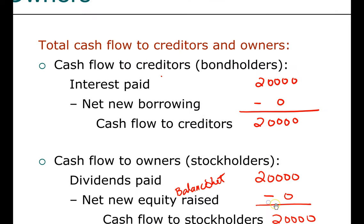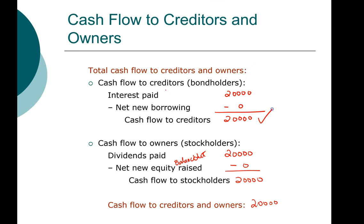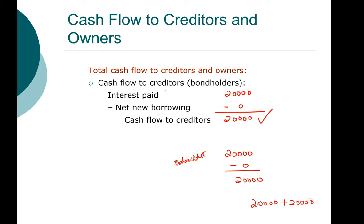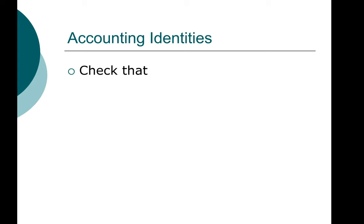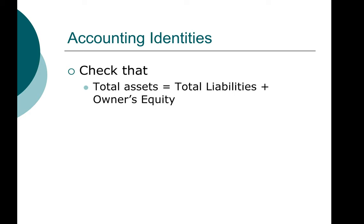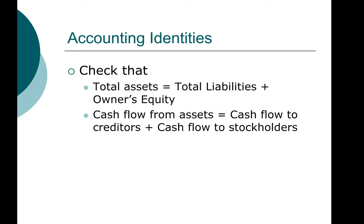Total cash flow to both parties: $20,000 paid to creditors plus $20,000 paid as dividends equals $40,000 — exactly equal to cash flow from assets, as they must be. To sum up, our accounting identity holds: total assets equal total liabilities plus owner's equity, and cash flow from assets equals cash flow to creditors plus cash flow to stockholders. This concludes our discussion on financial statements, cash flows, and taxes.